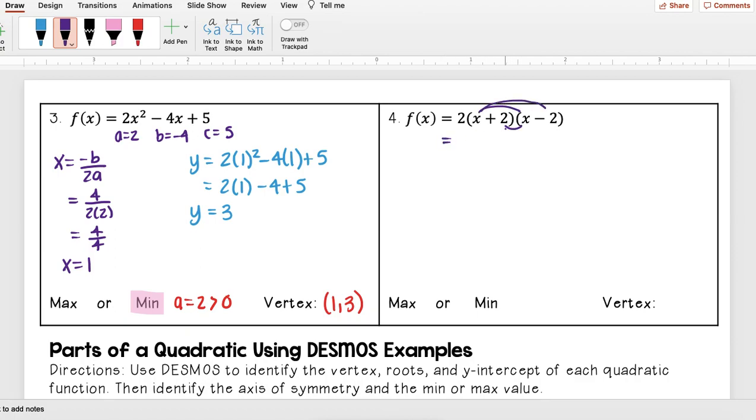Remember back in chapter 7, I need to do my double distribution. So x times x, I get x². X times -2, I get -2x. 2 times x, I get plus 2x. And then minus 4. Well, I get x² plus 0x, which just goes to 0, and then minus 4.